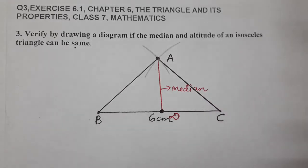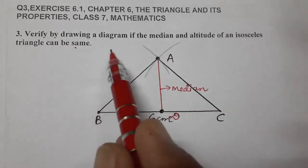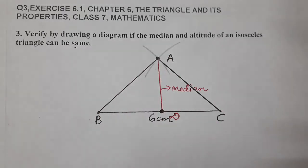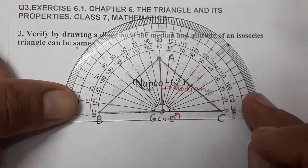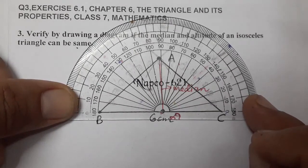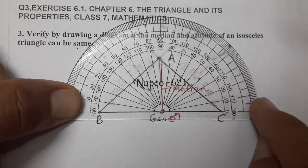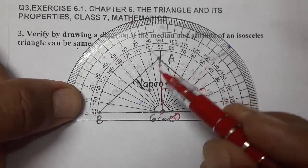Median and altitude are the same for isosceles triangles. How do we make altitude? Just measure 90 degrees from here. You can measure using a protractor 90 degrees. If it is 90, then you can write it is altitude. This is exactly 90 degrees.